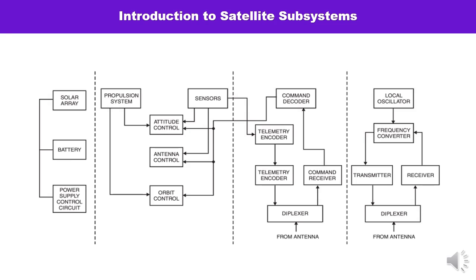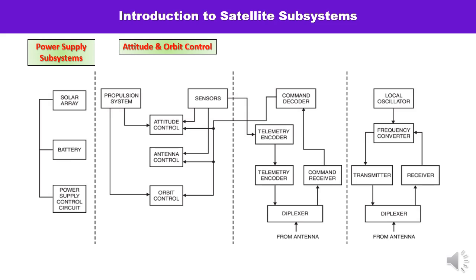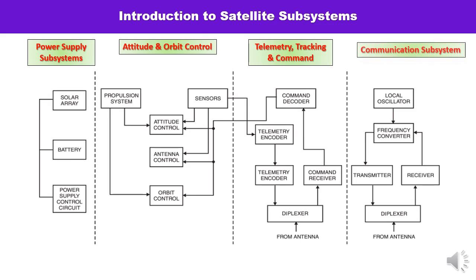You can see a diagram showing the various satellite subsystems. As already mentioned, the satellite subsystems can be broadly divided into four categories. You can see four columns shown here. First is the power supply subsystem, second is attitude and orbit control, third is telemetry tracking and command, and fourth is the communication subsystem. We are going to discuss these four satellite subsystems in detail, one by one.